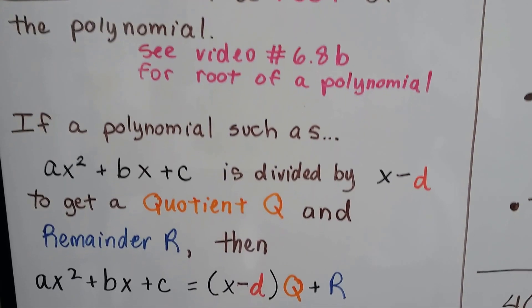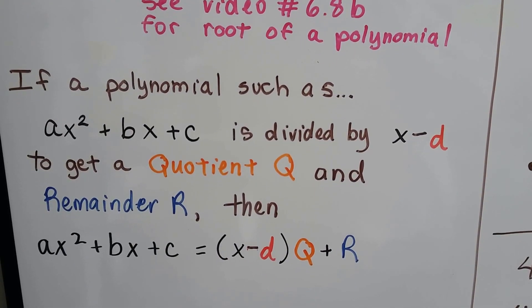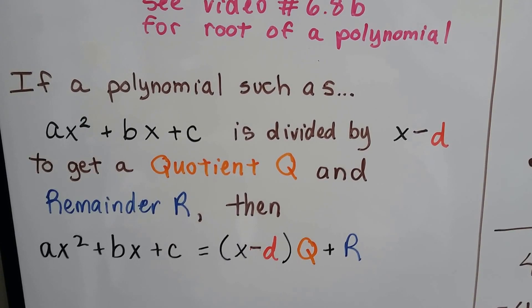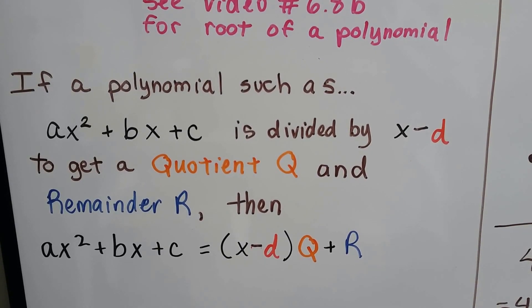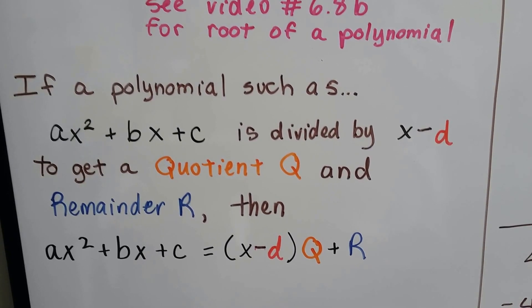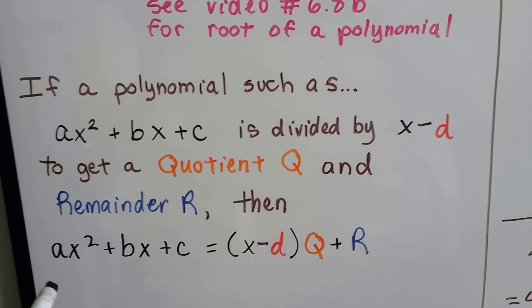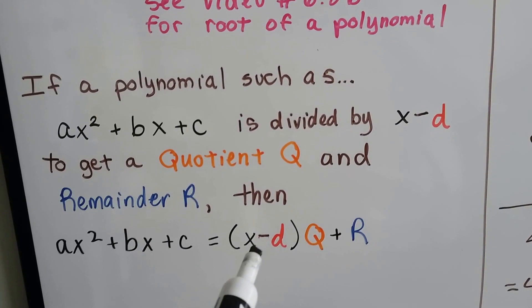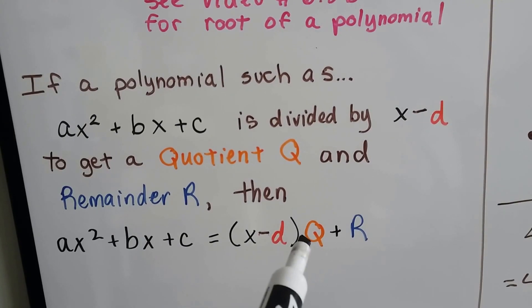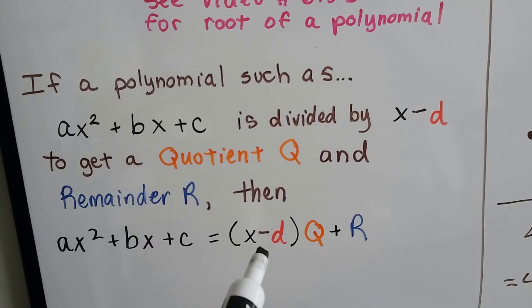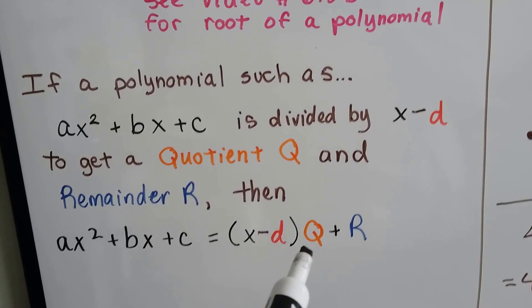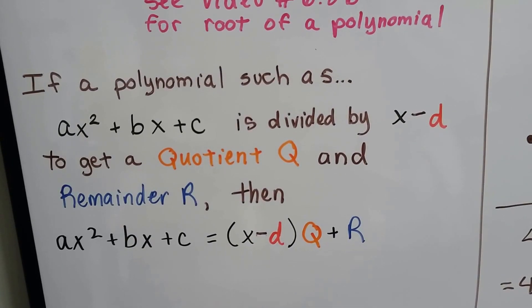So if a polynomial like ax squared plus bx plus c is divided by a binomial x minus d, we get a quotient q and a remainder r, then that polynomial is going to equal x minus d times q plus r.